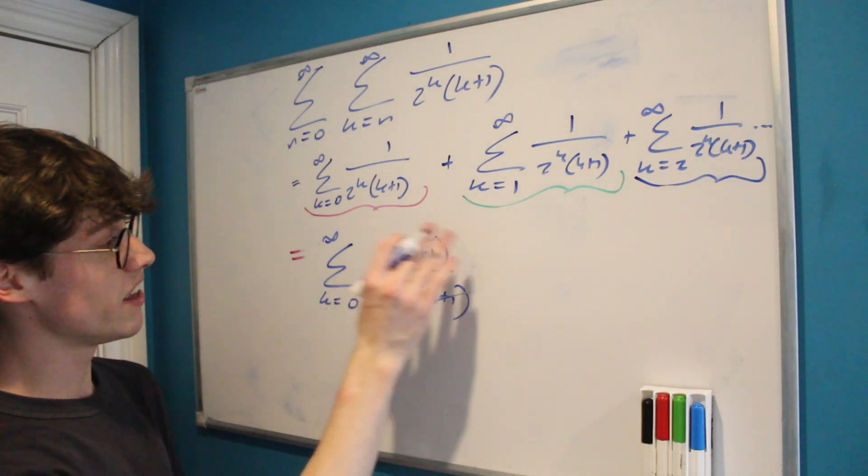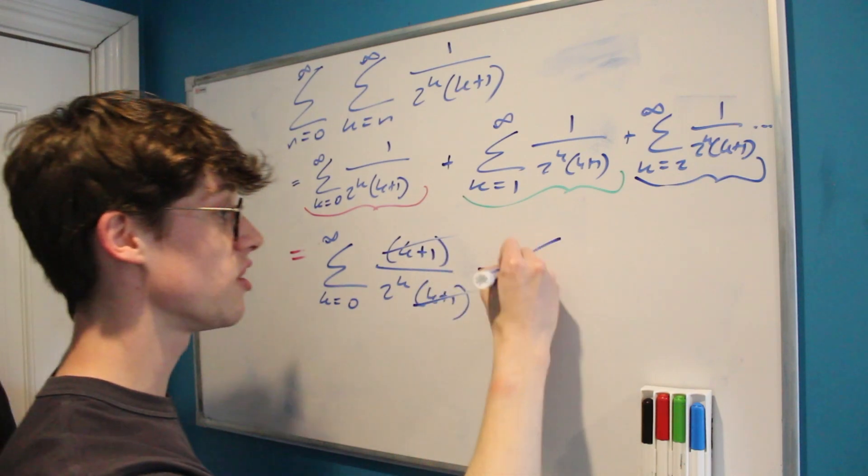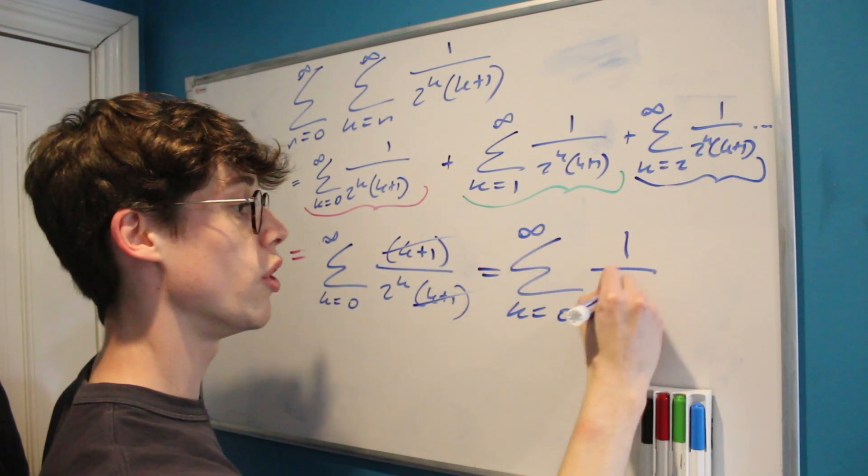And of course this is just equal to the sum from k equals 0 to infinity of 1 over 2 to the power of k. But this is quite a well-known result, so many of you may know that this is equal to 2.